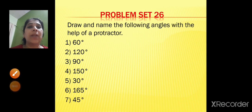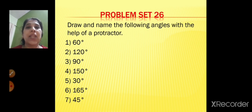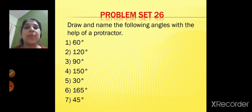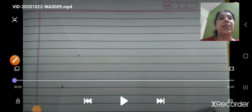Now let's solve Problem Set 26: draw and name the following angles with the help of a protractor. You have to draw seven angles: 60°, 120°, 90°, 150°, 30°, 165°, and 45°. Let's draw these angles. First one is 60 degrees.